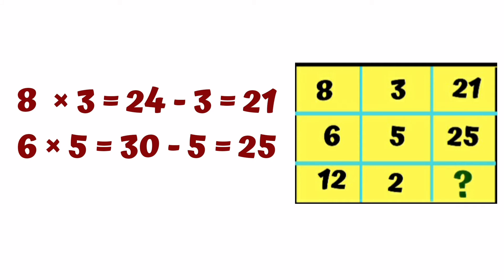Friends, here is the trick. 8 times 3, the answer is 24. Then subtract the middle digit. So, 24 minus 3 equals 21.